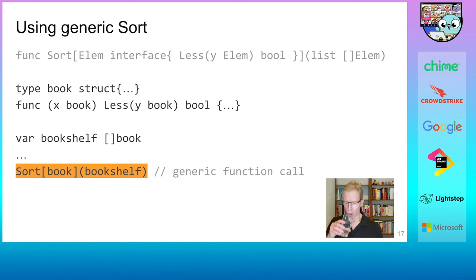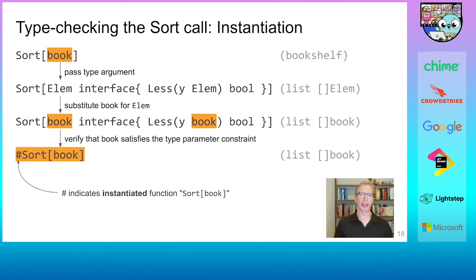But how does this actually work? So let's analyze this sort call in detail. There are two steps, one for passing the type argument and one for passing the ordinary argument. Passing the type argument is called instantiation. It transforms the generic sort into a specific sort just for books. Note that this step happens at compile time. So how does the compiler go about this?